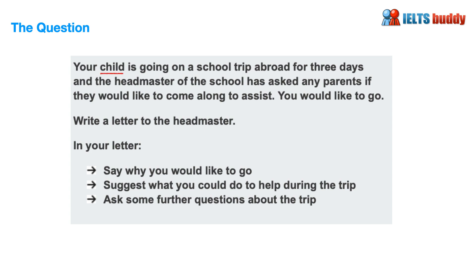Let's take a look at the question. Your child is going on a school trip abroad for three days and the headmaster of the school has asked any parents if they would like to come along to assist. You would like to go, so you're writing the letter to the headmaster. Specifically, you'll be given three bullet points to respond to: say why you would like to go, what you could do to help during the trip, and ask some further questions about the trip.